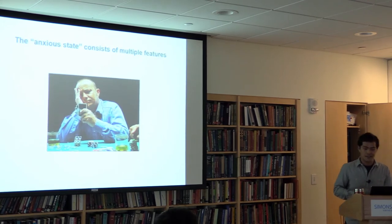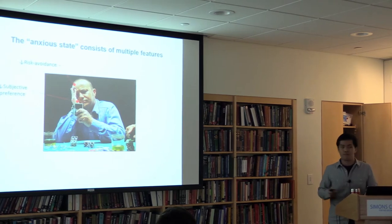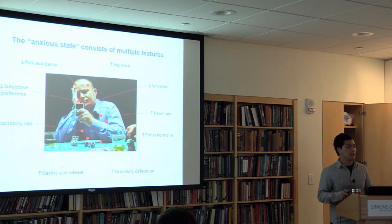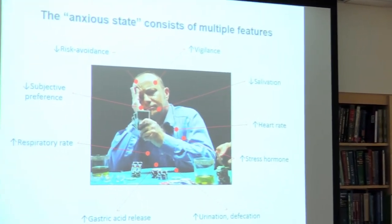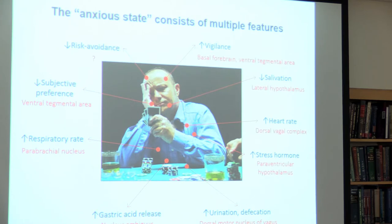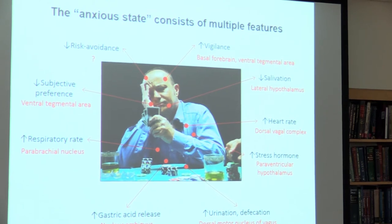For example, when you play poker, you may become really anxious—you don't want to do anything risky, you might want to walk away, you start breathing faster, and so on. All of these changes are coordinated by diverse modalities of the nervous system output. How is a behavior state assembled from these diverse features? How are these diverse features coherently modulated? We had a good guess.